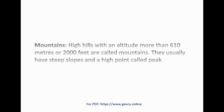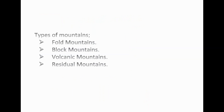Mountains are high hills with an altitude of more than 610 meters or 2,000 feet. They usually have steep slopes and a high point called a peak. Types of mountains are fold mountains, block mountains, volcanic mountains, and residual mountains.